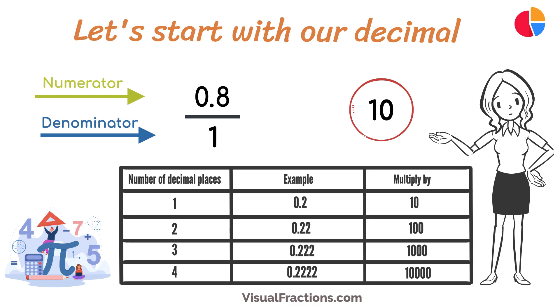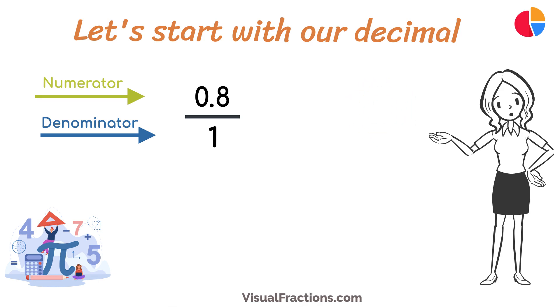This sets up the conversion process where we multiply both the numerator, the decimal, and the denominator, 1, by 10 because there is one decimal place.